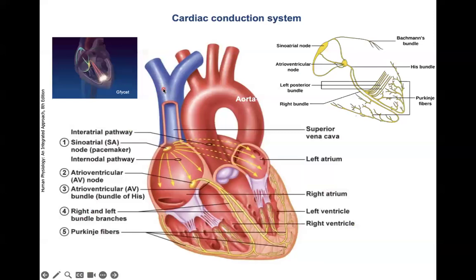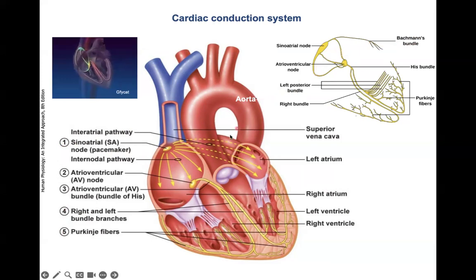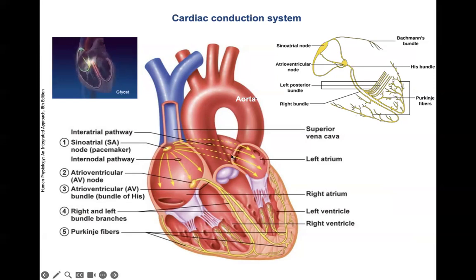The cardiac conduction system can be broken down into five different stations. The primary pacemaker, the SA node, initiates the first signal. It goes to the right atrium and to the left atrium following different routes: the Bachmann's bundle for the left atrium, and three internodal pathways for the right atrium. The AV node has already picked up the signal from the SA node very quickly, well before the two atria have been completely excited.